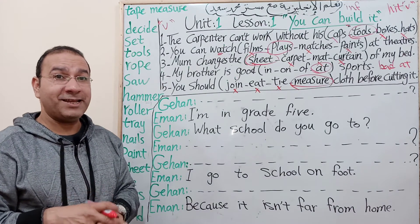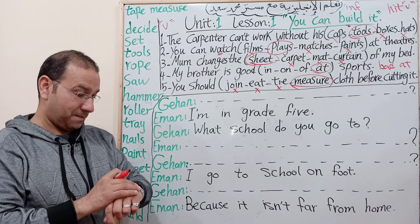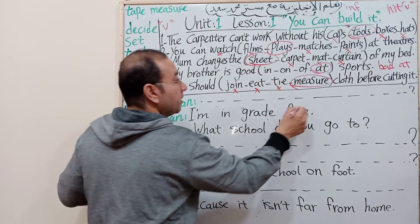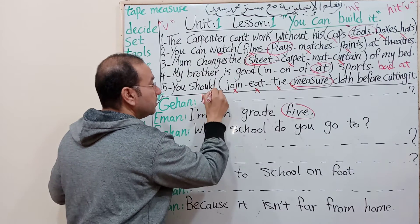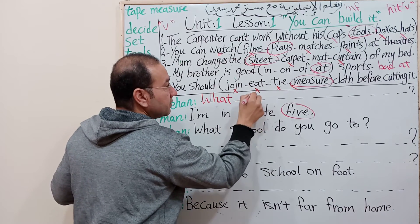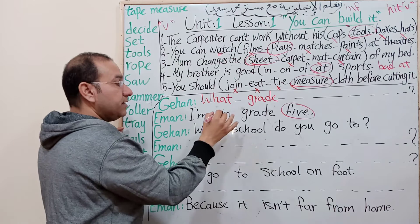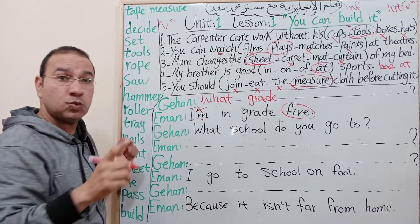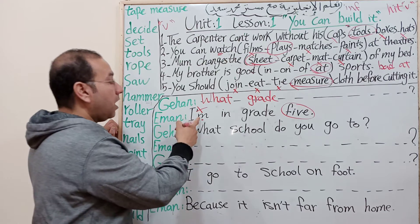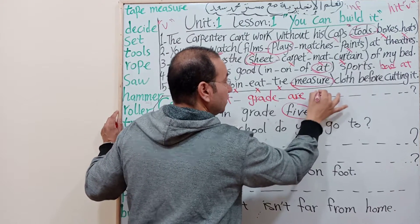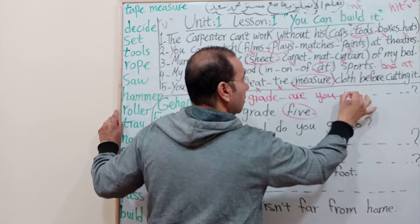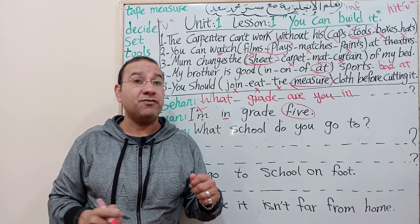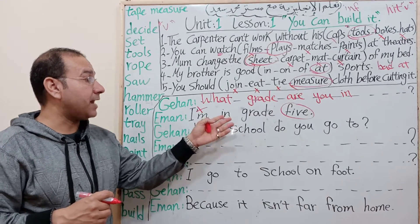The answer is 'I am in grade 5' - so what is the question? Think. Very good - 'What grade are you in?' 'I am' becomes 'are you.' What grade are you in? Answer: 'Yes, I am in grade 5.' The question matches the answer. Next: 'What school do you go to?' Translate it - it's asking which school you go to. Answer: 'I go to Al-Manar Language School.' The question matches the answer.